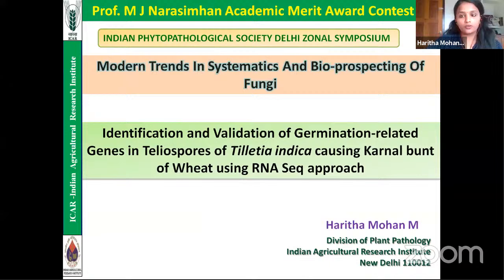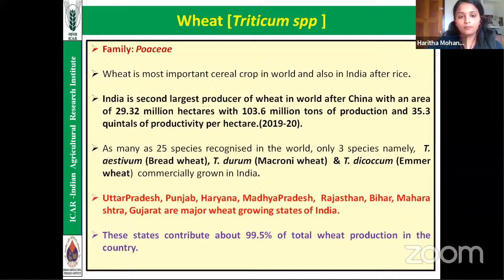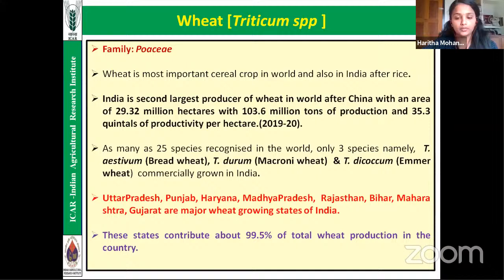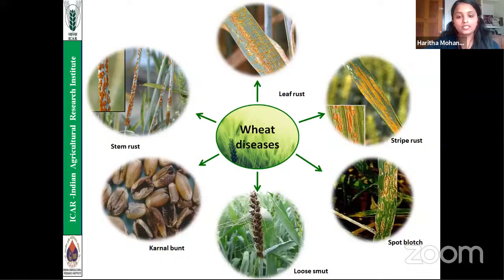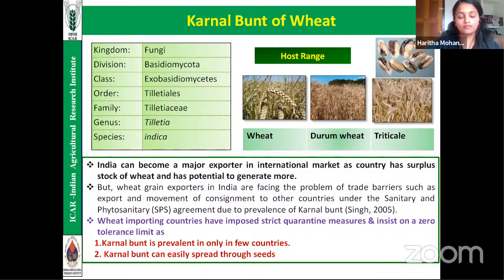The presentation is titled: Identification and Validation of Germination-Related Genes in Teliospores of Tilletia indica Causing Karnal Bunt of Wheat Using an RNA-Seq Approach. Wheat is an important food crop worldwide, with India as the second largest producer after China at 103.6 million tons. Three wheat species — T. aestivum, T. durum, and T. dicoccum — are commercially grown in India. Karnal bunt of wheat is caused by Tilletia indica, belonging to the division Basidiomycota, family Tilletiaceae.